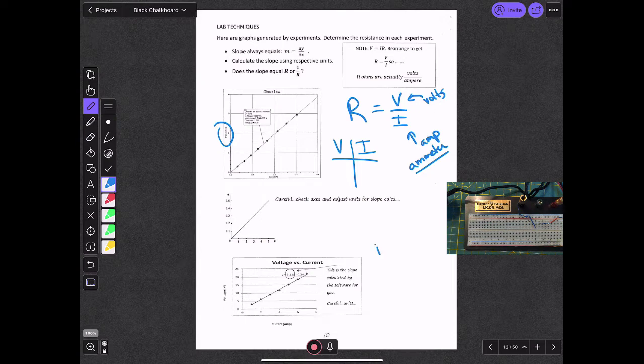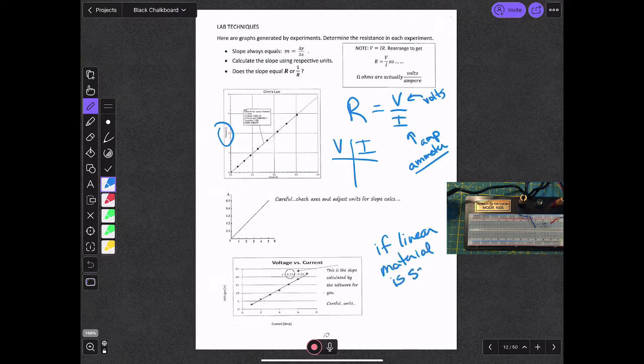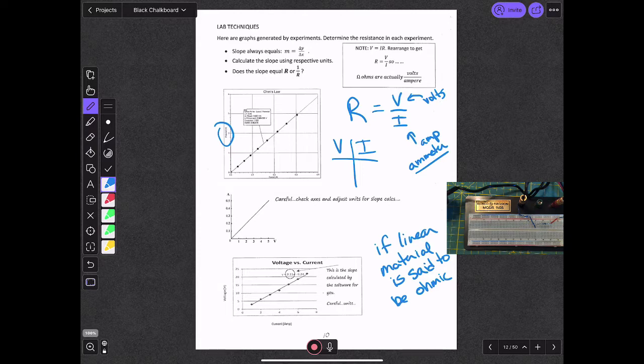In fact, if it's linear, then the material is said to be ohmic. That is to say, it satisfies Ohm's law. If, on the other hand, it does not stay linear, if this pattern curved, and many materials do - for example, batteries themselves - the higher voltage you try to push through a battery, it will not always give you an increasing current that's directly proportional.